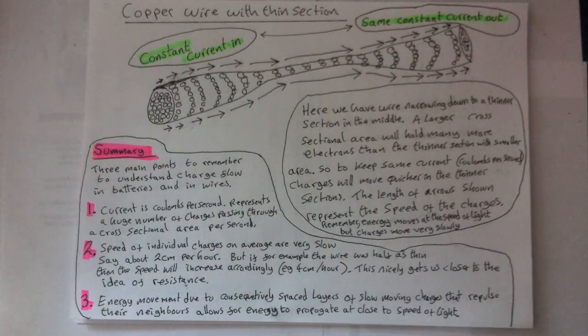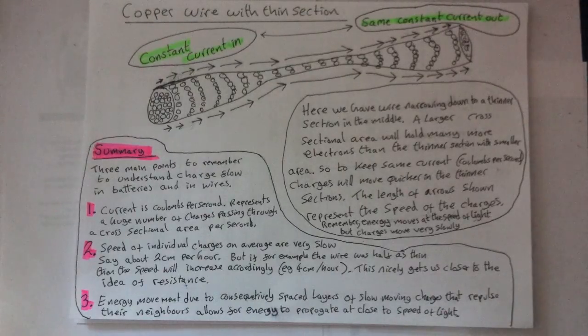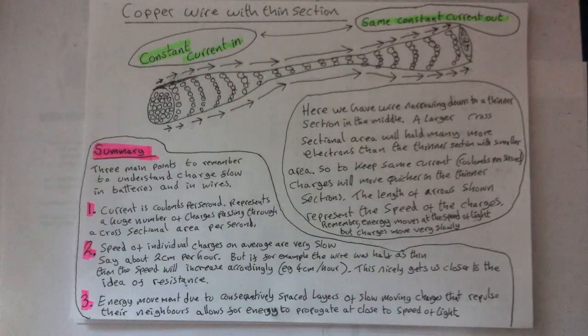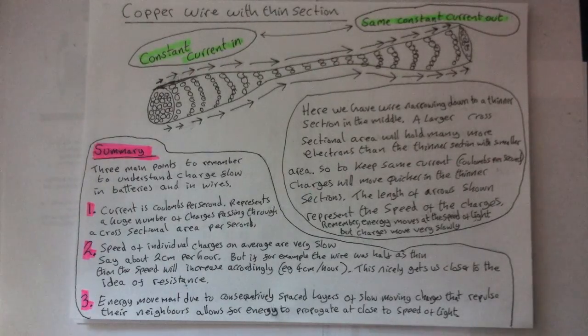Now because all the charges in our copper wire are again similar to touching marbles, if at one end we have a current of 1 coulomb per second, that will mean that the other end must have the same number of coulombs moving each second as well, for example the current is the same throughout the circuit.